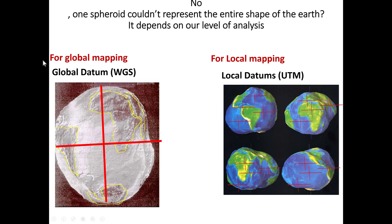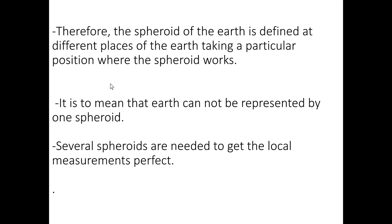In this case, local mapping is the basic concept I am going to mention. Global mapping is used in the original region — in Africa, in Europe, in various regions. The original classification is defined as a different place taking a particular position where the spheroid works. It means that one spheroid can represent one band, and a band of spheroids can be found in the region.